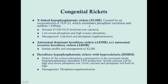Since XLH is X-linked, look for a family history — it's usually in boys, and you'd look at the mother's history or her brothers or father for the same condition. Autosomal dominant and autosomal recessive hereditary rickets are essentially the same as XLH — overproduction of FGF23 — just transmitted differently. Suspect autosomal forms if you see this presentation in a girl, though boys can be affected too.